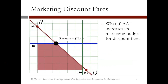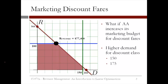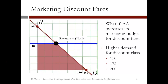This graph shows our current feasible space and optimal solution. What would happen if we increased the marketing for discount fares? The demand for discount fares would increase. But since we're not even meeting the current demand for discount fares with the optimal solution, this doesn't give us any extra revenue. So we shouldn't add any marketing for discount fares.